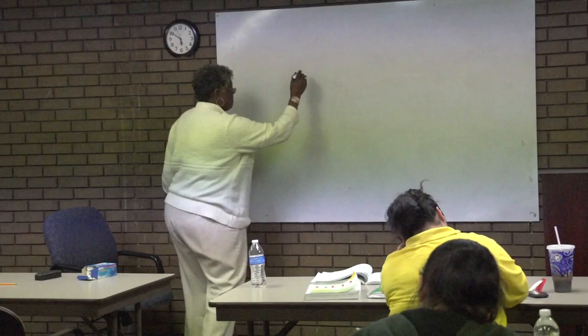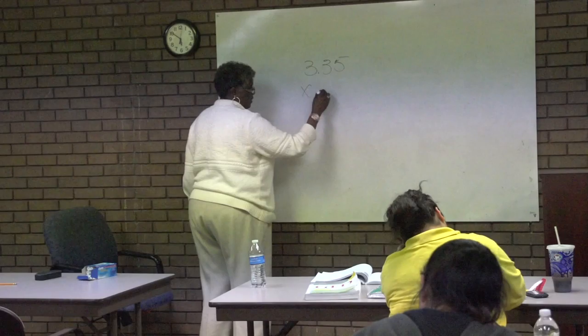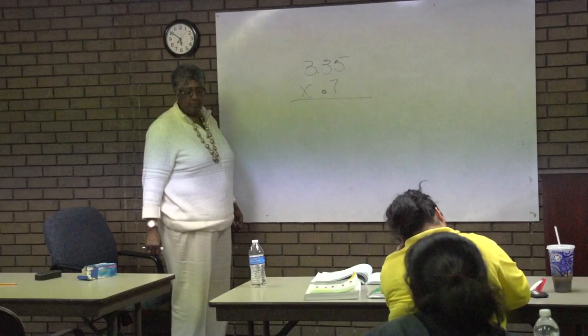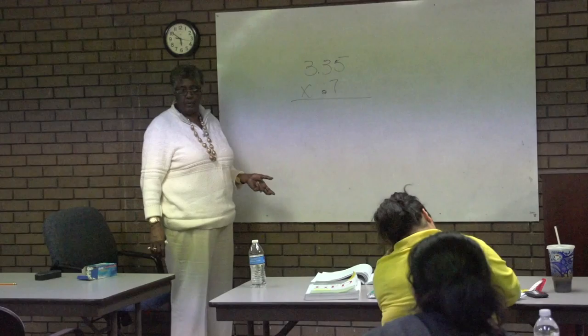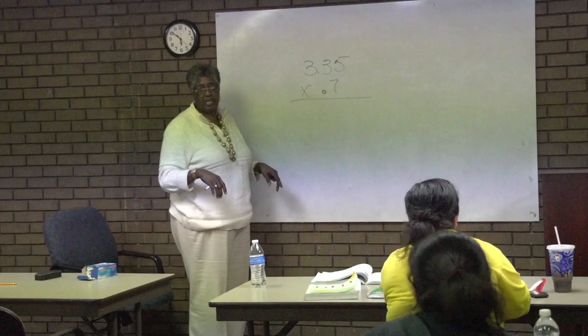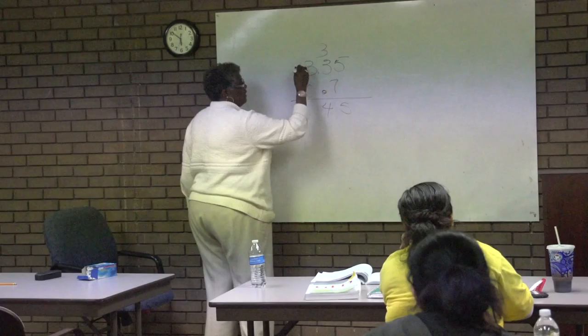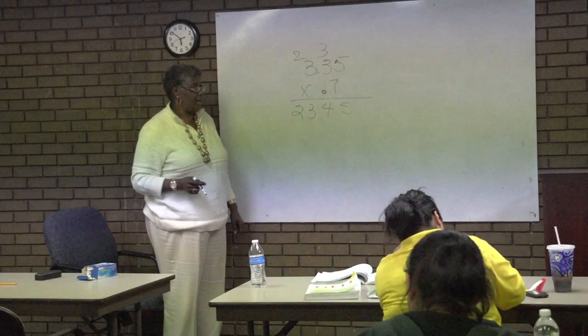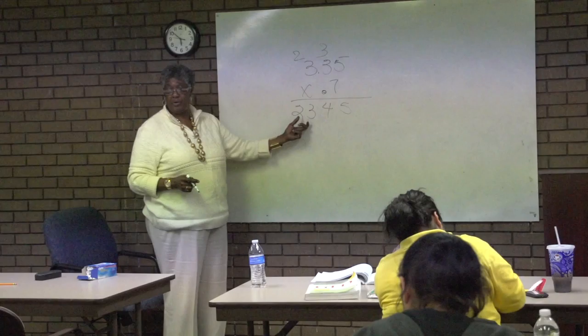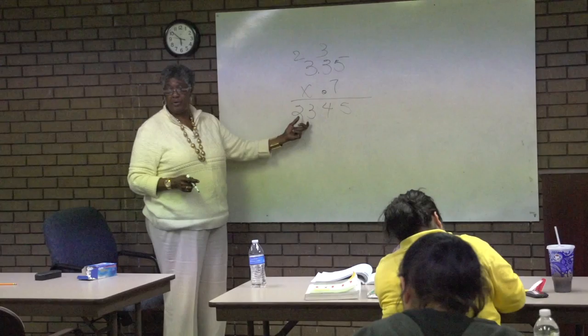When you multiply decimals, multiply as if it's a whole number — pretend the decimal point is not there. Pretend that's 335 times 7 and work it the way you normally would. Decimal points don't have to be lined up; you don't even have to worry about the decimal point when you're working the problem. Just multiply: 7 times 5, 7 times 3 plus 3, 7 times 3 plus 2. Once you have your answer, you have to remember — you were not multiplying 335 times 7.